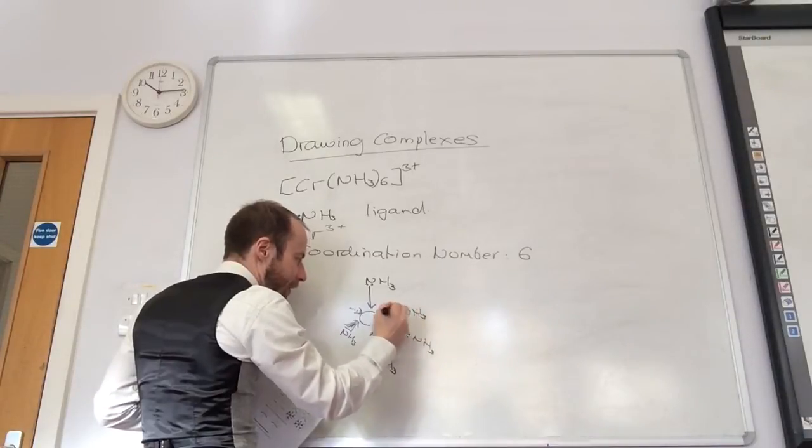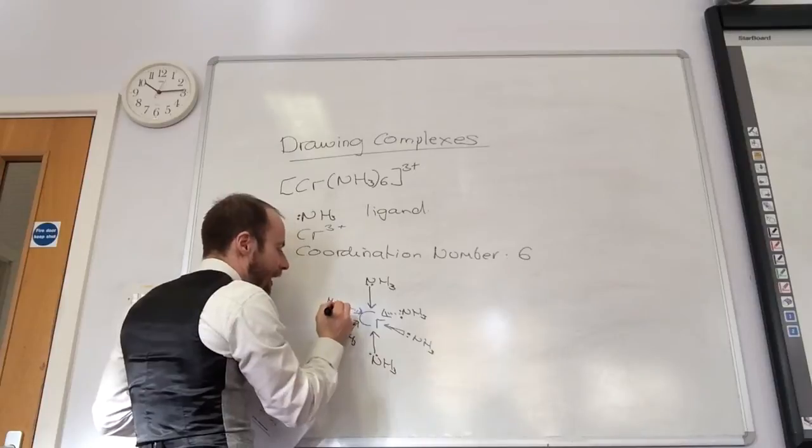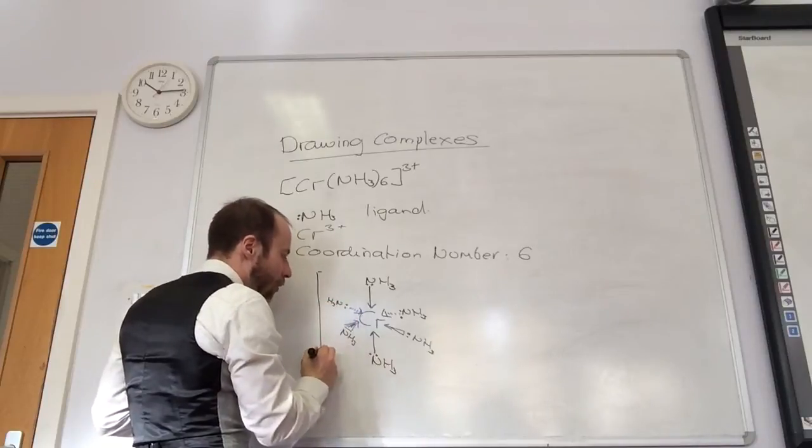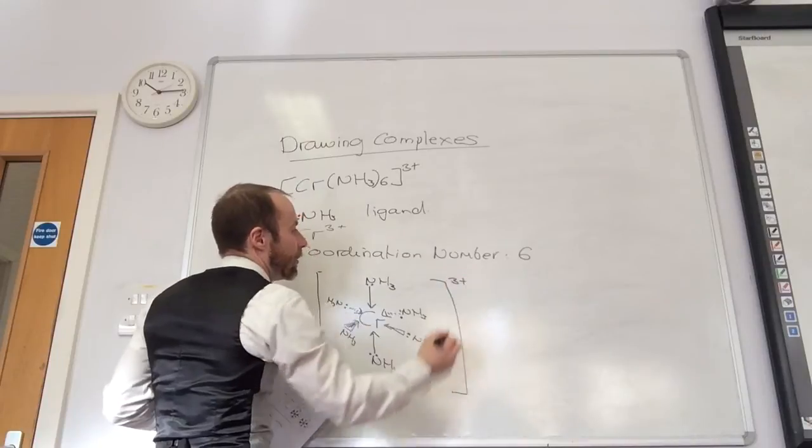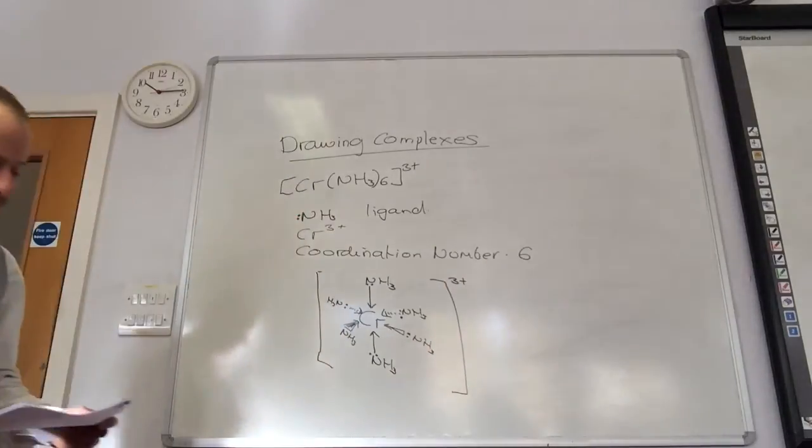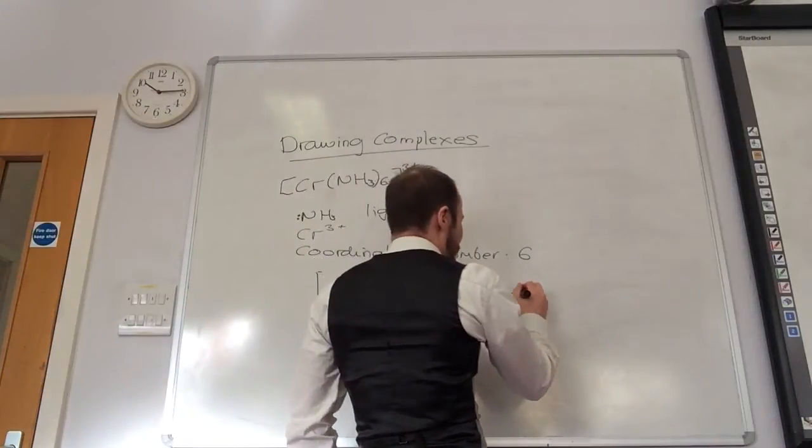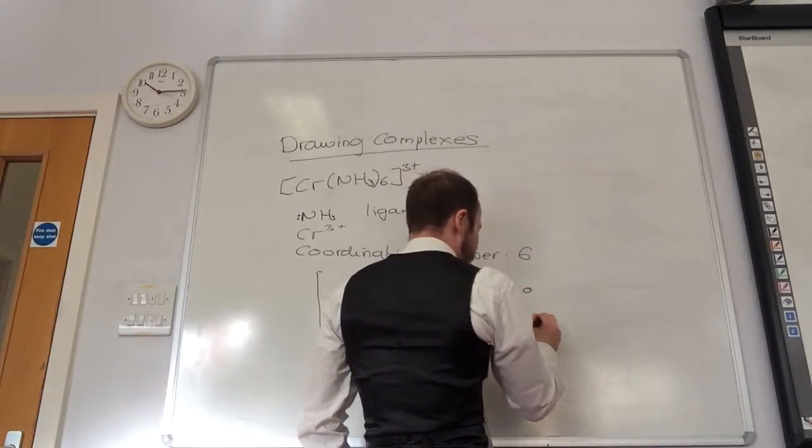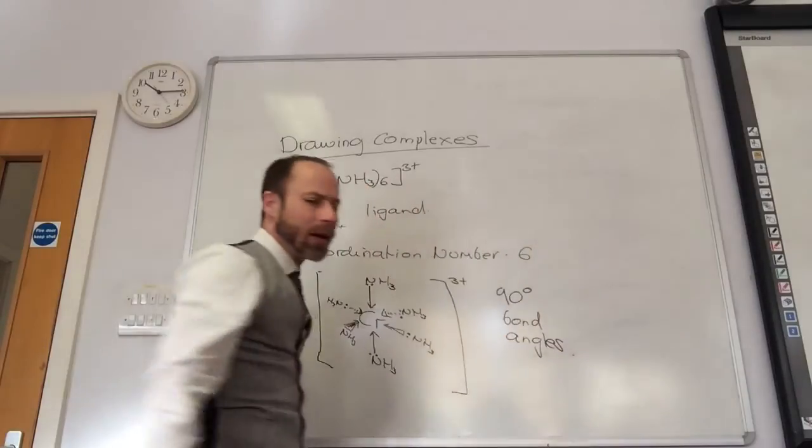I would kind of draw these and then add your arrows on. NH3 with your lone pairs. Like so. And then you put the whole thing in square brackets and put the charge like so. So my bond angles are going to be 90 degrees.